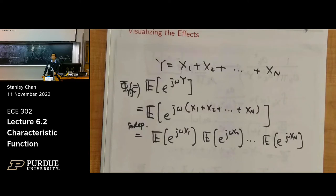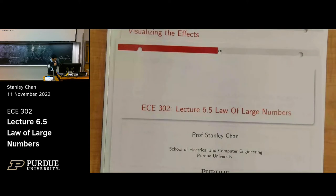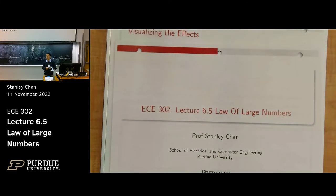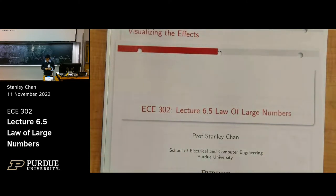Moving on to Section 6.5, Law of Large Numbers. Where are 6.3 and 6.4? They are the mathematical tools. Section 6.3 is Jensen's inequality, which we skip. Section 6.4 is Markov and Chebyshev inequalities, needed for 6.5. But if I start by just telling you the inequalities it would be boring — it comes with a purpose, and the purpose is here: the Law of Large Numbers. Let me tell you the story first, then the mathematical tool, then the conclusion.